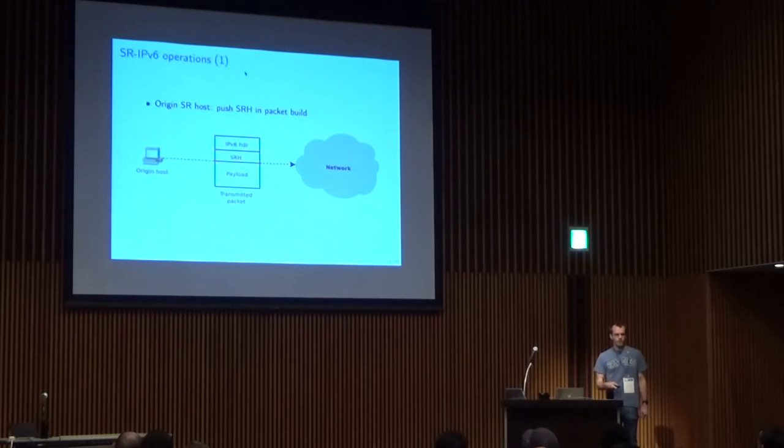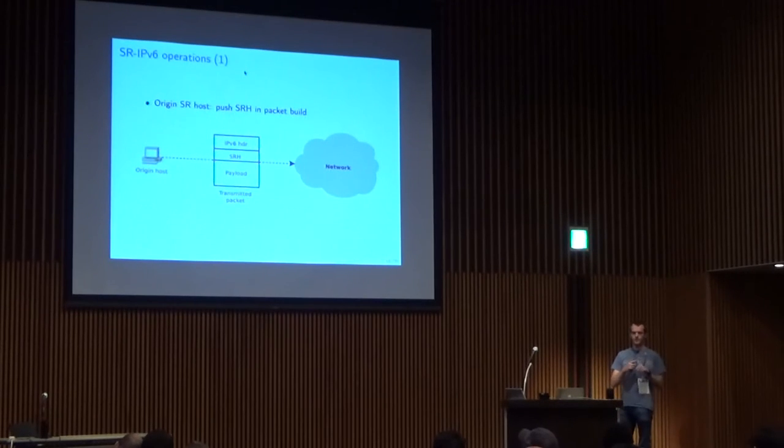We can distinguish four basic operations for segment routing. The first operation is when an end host wants to impose an SLRH onto a packet. That would be, for example, an application that wants to set an SLRH for a given flow. When building the packets, it can select the payload, and then before pushing the IPv6 header, it just pushes the SLRH on top of the payload and sends the packets into the network.